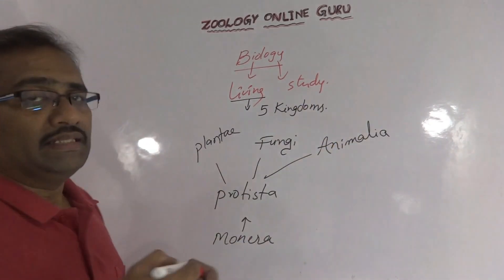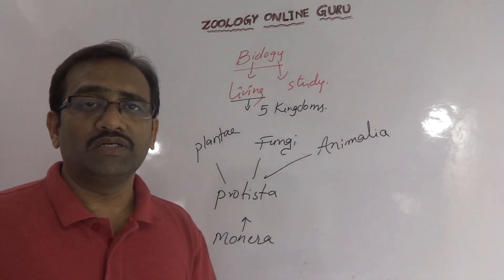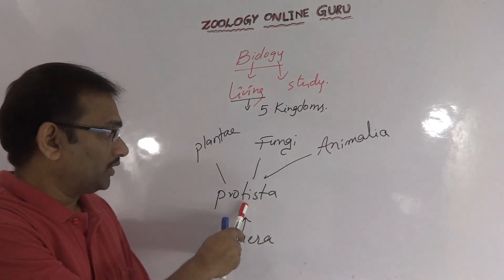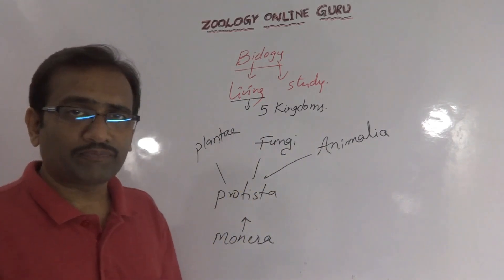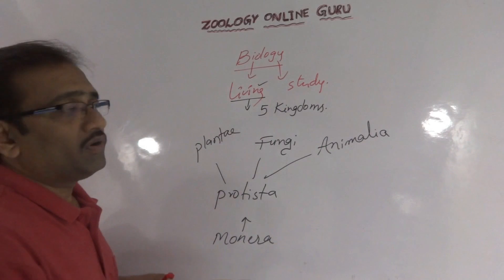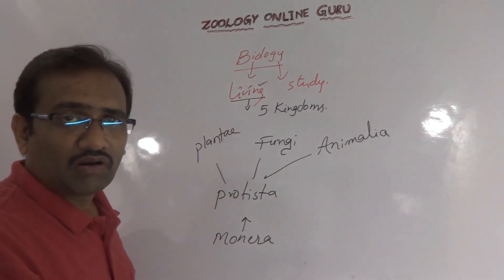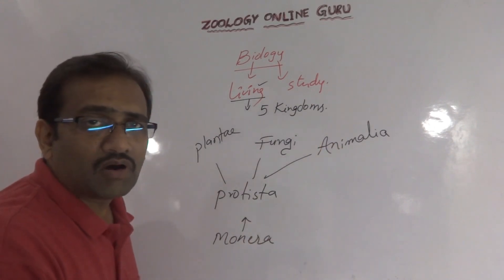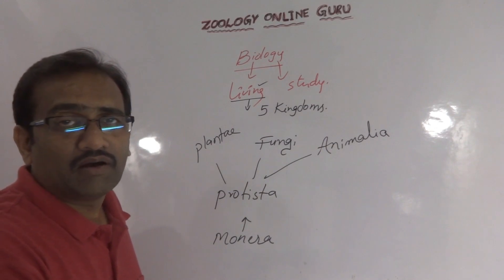So this is Whittaker's classification of the five kingdom structure: Monera, Protista, Plantae, Fungi, and Animalia. All living organisms that biology deals with — the study of living organisms — are categorized into these five kingdoms by Whittaker.